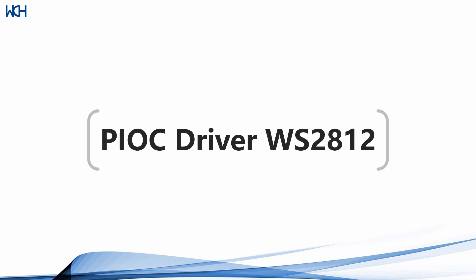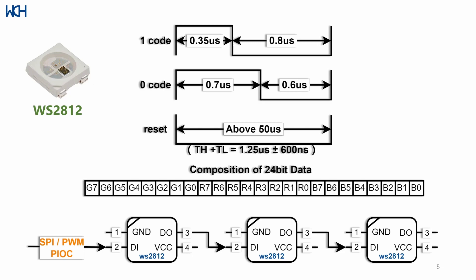To demonstrate this, we're going to be using the PIOC to drive WS2812 LEDs. The WS2812 connects RGB LEDs as a chain through an input-output signal. To send a code of 1, we set the signal high for 0.35 microseconds and low for 0.8 microseconds. To send a code of 0, we send a high signal for 0.7 microseconds and a low signal for 0.6 microseconds, and to reset, it's low for more than 50 microseconds.